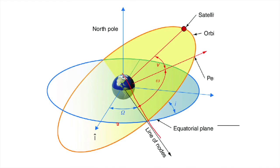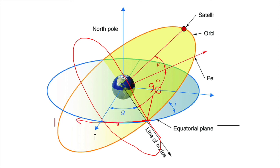A satellite with a westward velocity component at the ascending node has an orbital inclination lying between 90 and 180 degrees. Such an orbit is called a retrograde orbit. From the diagram, we can see the ascending node, and if the orbit is rotating in that direction with a westward velocity component, the inclination angle lies between 90 and 180 degrees.